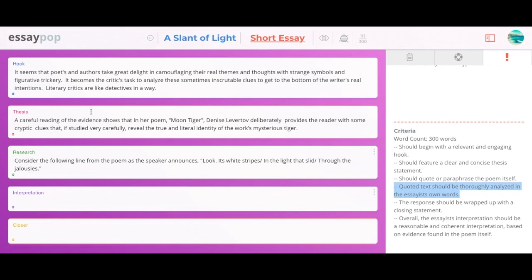So you've written your hook, your thesis, and your research, and now you're ready to move on in your essay. Typically, the next part would be your interpretation, the purple box here. Now this is where you, the writer, are going to be explaining things to the reader. You're going to be making sense of your point or your argument. And in fact, if you look at the criteria over here, it says quoted text should be thoroughly analyzed in the essayist's own words. And in fact, if you don't have something in your own words in your essay, well then it's not really your essay, is it?